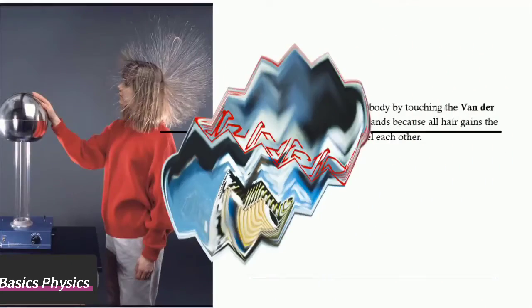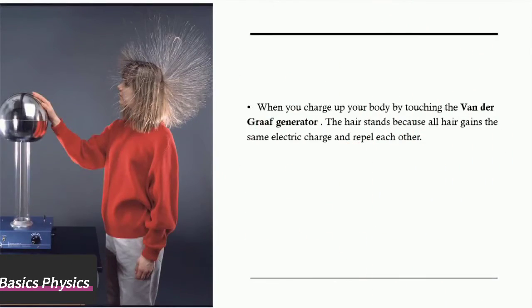When you charge up your body by touching the van der Graaf generator, the hair strands because all hair gain the same electric charge and repel each other. The force of repulsion is so great that it exceeds the weight of each hair strand. But your arms do not lift away from your body, even though they have the same charges as your body, because they are too heavy.